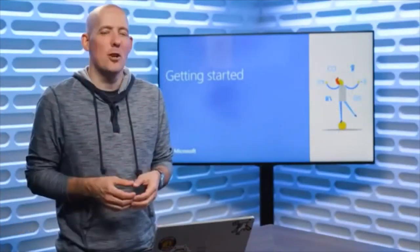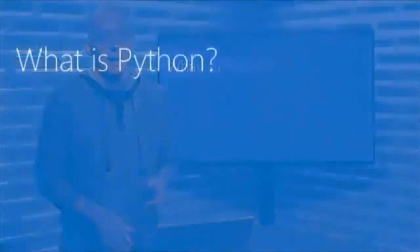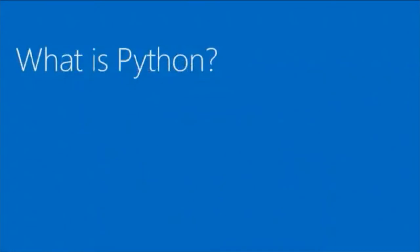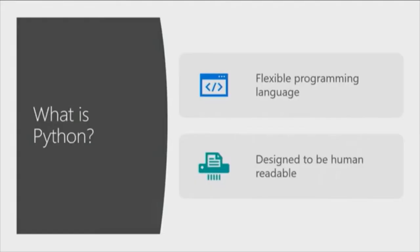Let's start digging into Python. Before we go anywhere, we probably should answer one question: what is Python? And if we're going to ask this question, we should answer it with a quote from Wikipedia. Python is an interpreted, high-level, general-purpose programming language created by Guido, and first released in 1991. Let's translate that into a bit of English and talk about what we can actually do with Python.